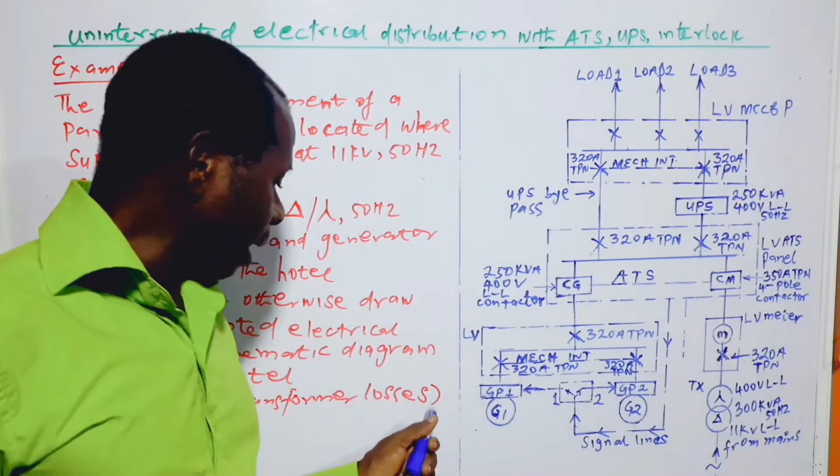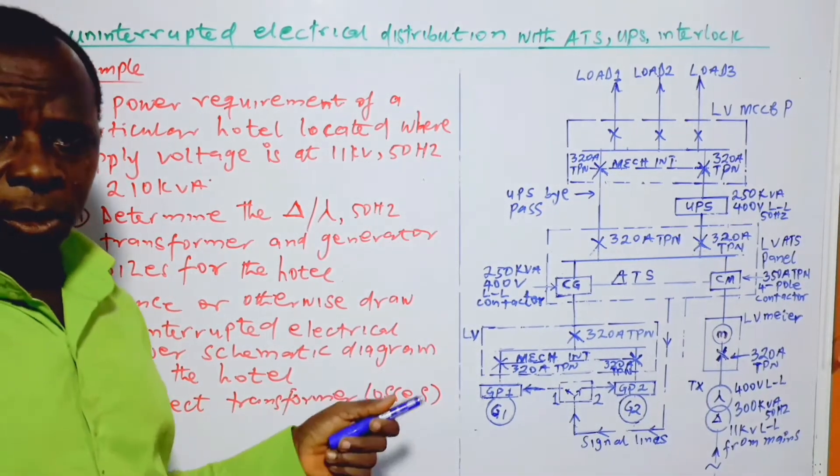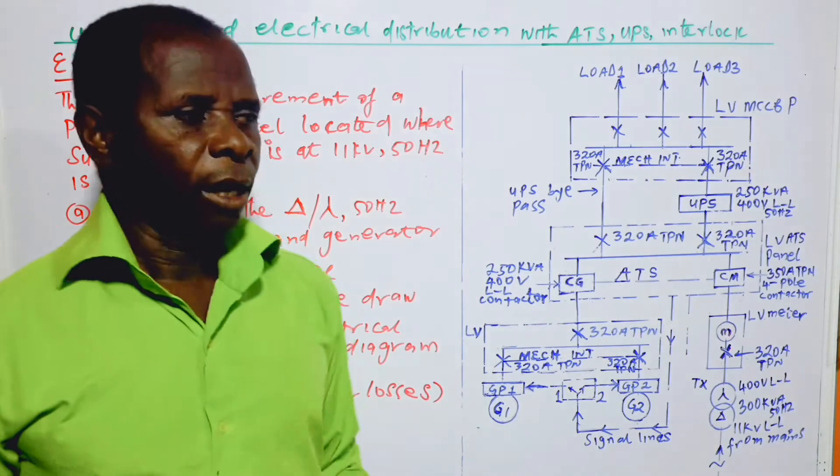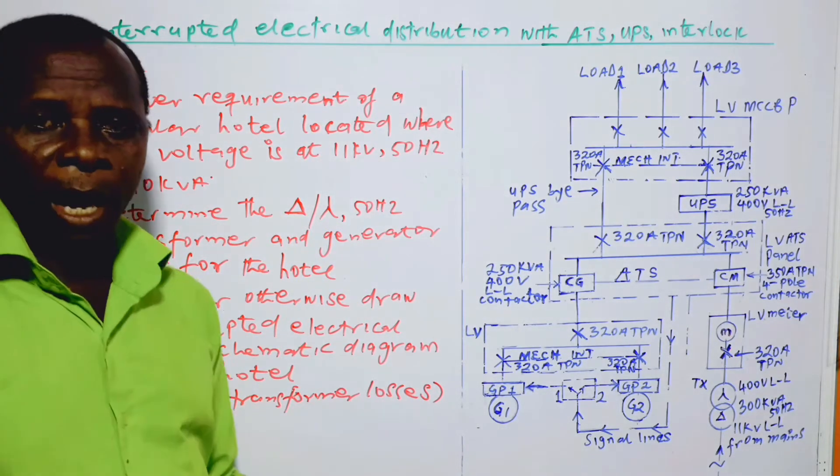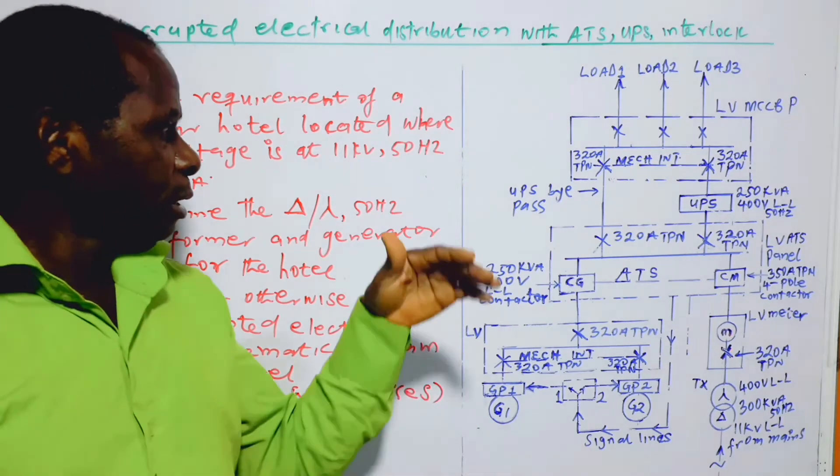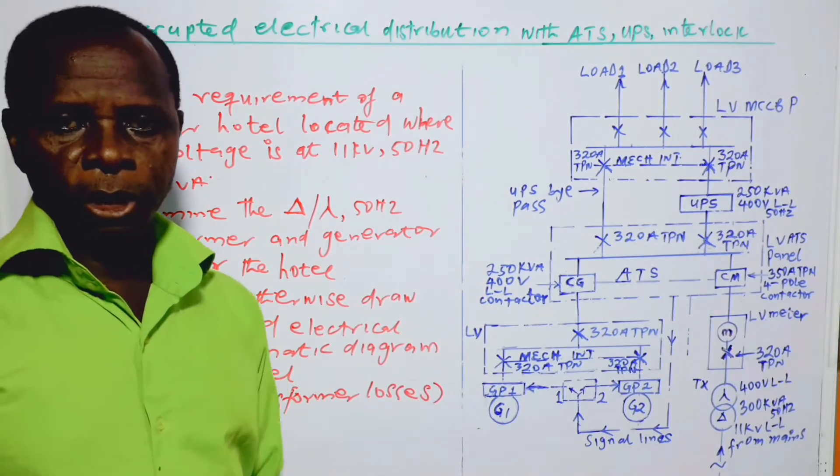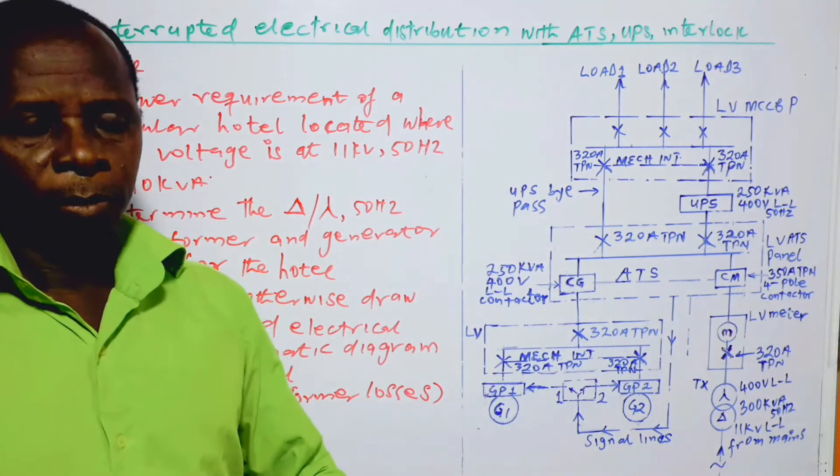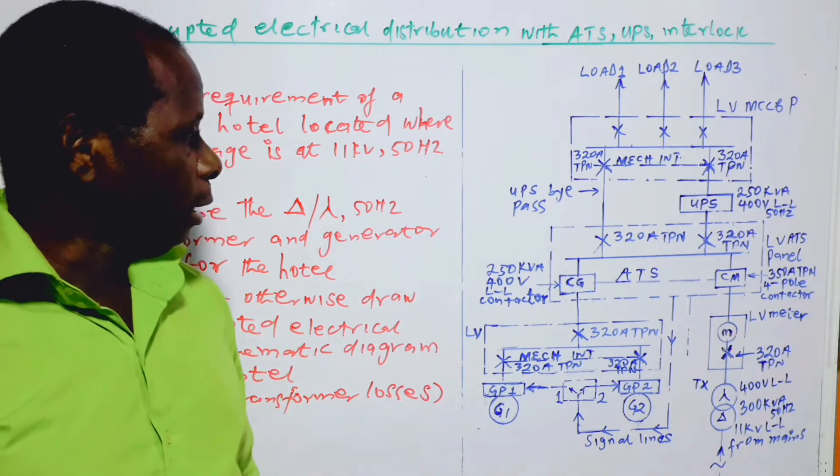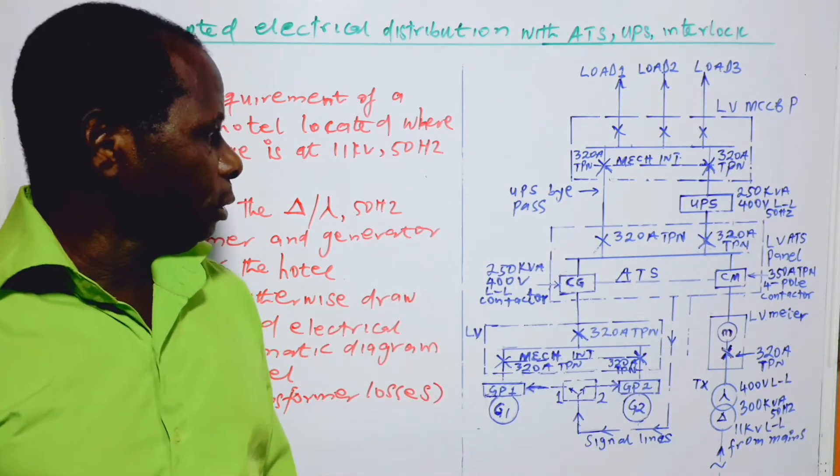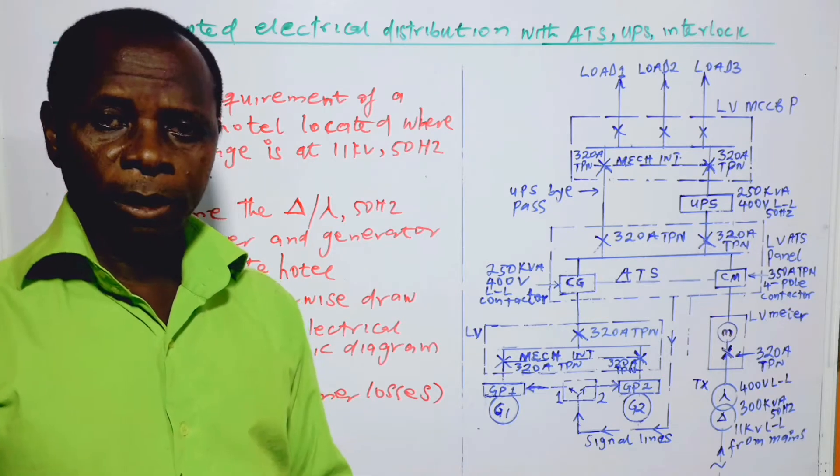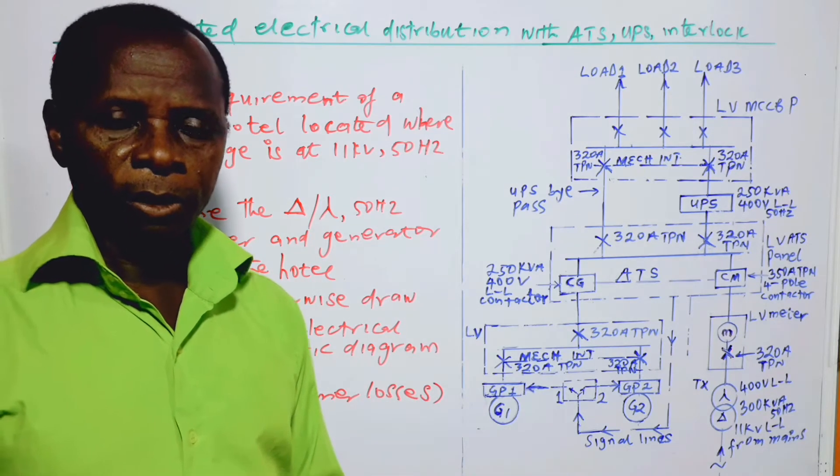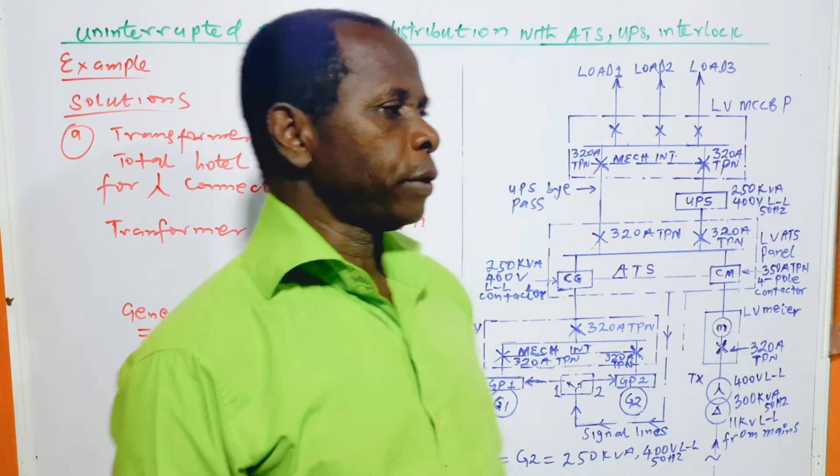The transformer losses could be neglected because the total loss, when all of them are added together, they are minimal. What we are saying here is that there are places where people cannot afford to have the transient blackout during the changeover period. Places like hotels cannot afford to have a blackout at all, and that is why this video is going to explain how the blackouts can be eliminated.